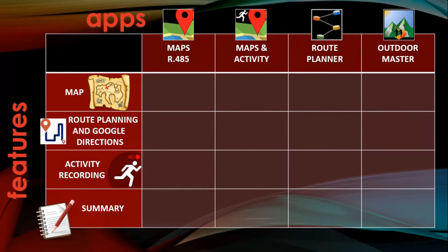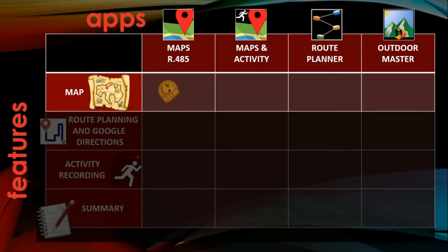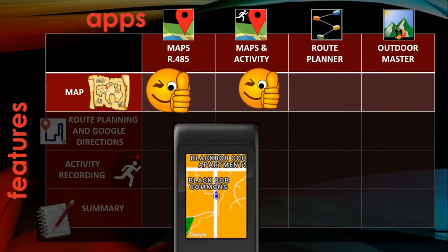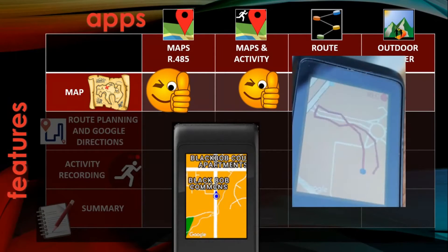Maps R485 and Maps Plus Activity are the ones that display the map image. In both cases, your watch must be paired to your phone via Bluetooth, and your phone must be connected to the Internet.